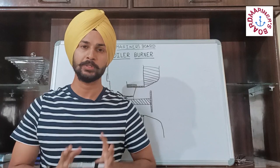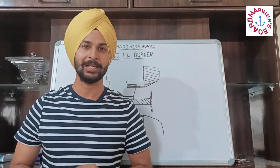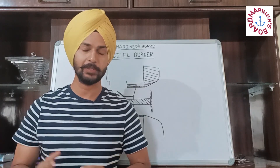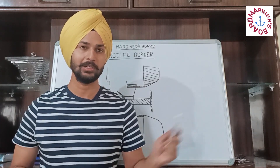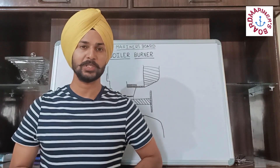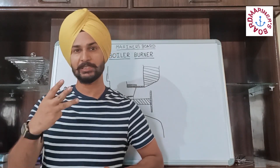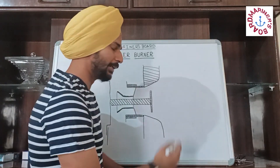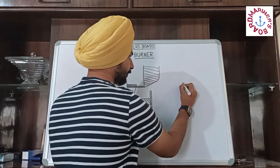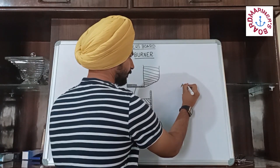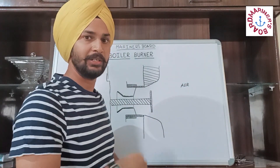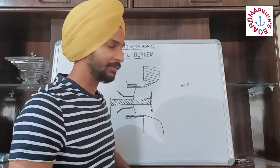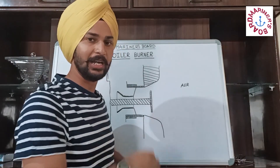Before getting into the burners, let's study about some of the basics of combustion inside the boiler. For combustion to happen inside the boiler, we need three elements. First is air, which is present inside the boiler and is given by the draught fan that is attached to the boiler.